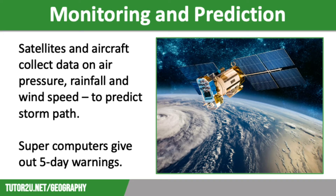We're going to look at these in more detail, starting with monitoring and prediction. Scientists use a variety of methods to monitor and predict weather hazards. Tropical storms are monitored by satellites and aircraft that track their size, temperature and moisture, as well as wind speed and air pressure. The path of the storm is predicted using a track cone, where scientists predict where it is likely to hit.